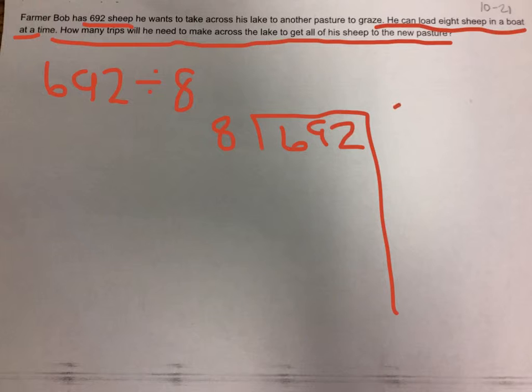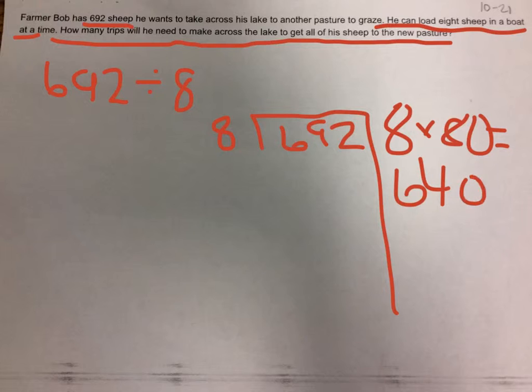So now let's do 8 times 80 equals 640. So now we subtract 640, which equals 52.